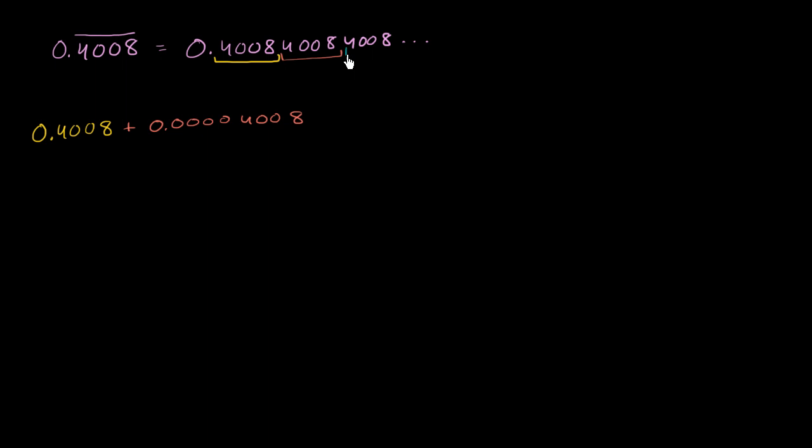And then this next 4008 represents 0 point, and we have eight zeros. 1, 2, 3, 4, 5, 6, 7, 8, 4008. And then we would just keep on going like that forever. We're essentially throwing four zeros before the decimal every time, and we could just keep on going like that forever.